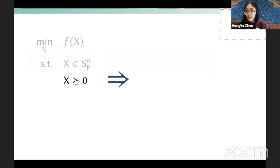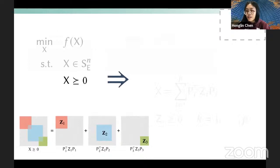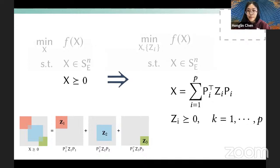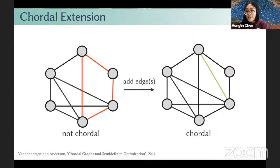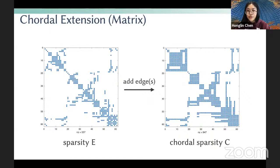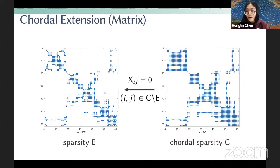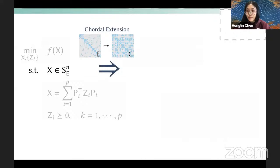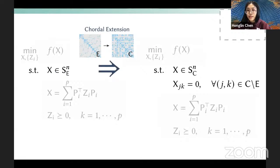Using chordal decomposition, we can decompose our large sparse PSD constraint into several small ones, which are cheaper and parallelizable. However, not every graph is a chordal graph, but we can always add new edges to make a non-chordal graph chordal. In terms of matrices, this is equivalent to adding non-zero entries into the original sparsity pattern. We can then add equality constraints to enforce the new degrees of freedom arising from the chordal extension to be zero. For any symmetric sparsity pattern E, we use chordal extension to extend it to a chordal sparsity pattern and add zero constraints to enforce the new entries to be zero.